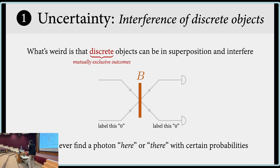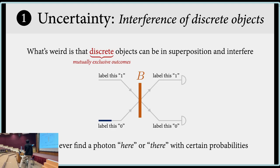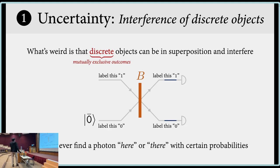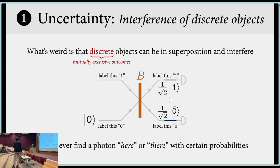This discreteness comes about because we only ever find the photon here or there. Instead of saying here or there, we can say: if it's in the lower path, we call it zero; if it's in the upper path, we call it one. So we prepare the system in a state zero, let it pass through the beam splitter, and it becomes something else — it changes to a state that looks like one over root two times (one plus zero).